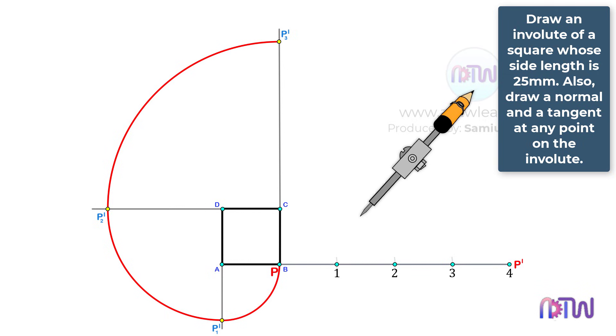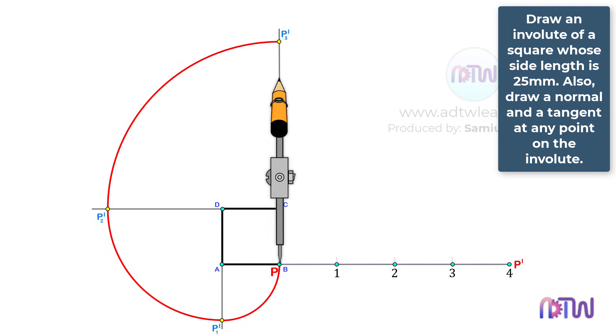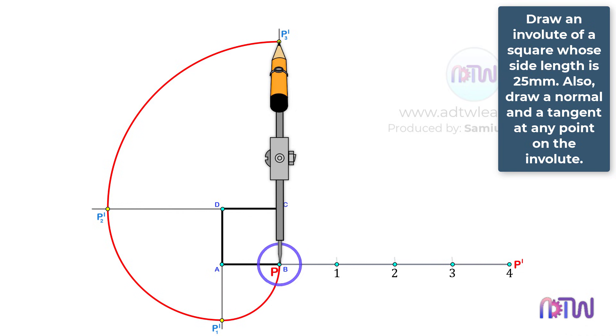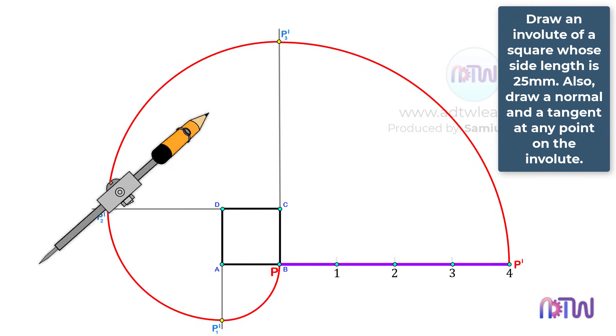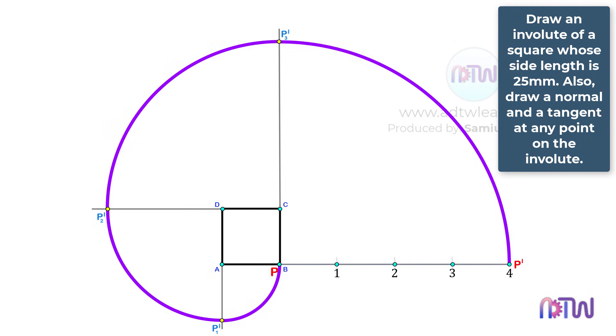Adjust the compass to the length between points B and P3, and using point B as a center, draw an arc from P3 up to this horizontal line. This is the required involute of a square.